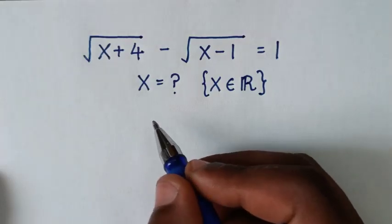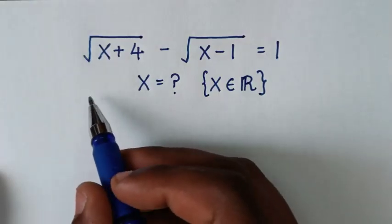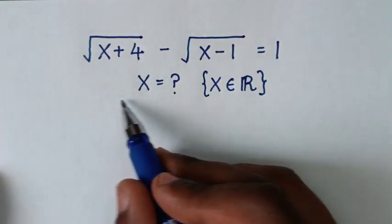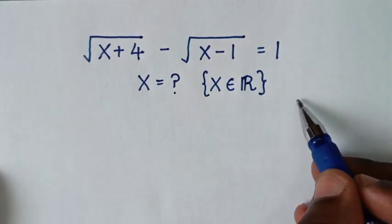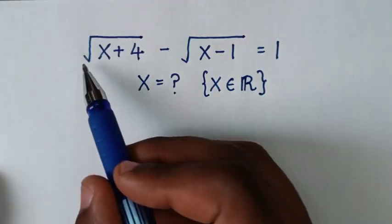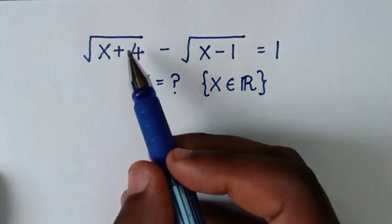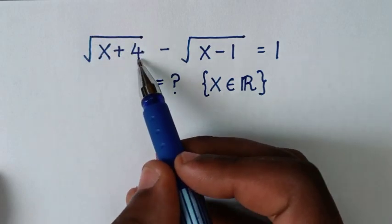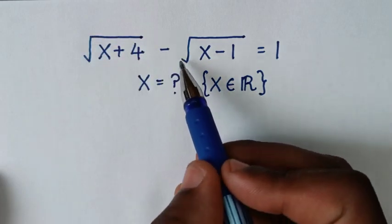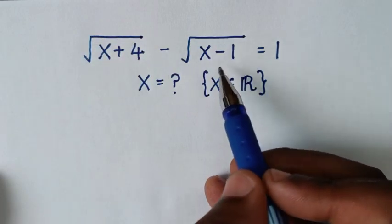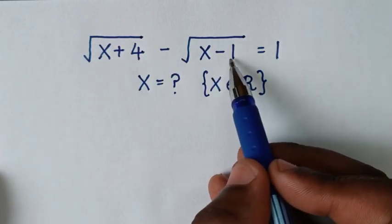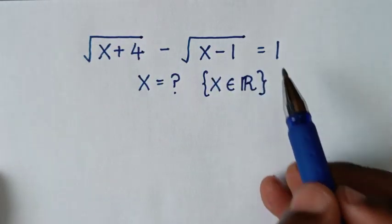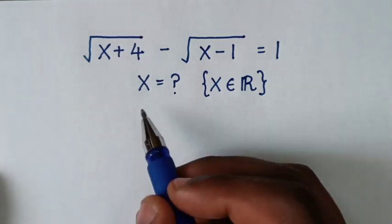Hello, you are welcome to solve this math problem, which is square root of (x plus 4) minus square root of (x minus 1) is equal to 1.